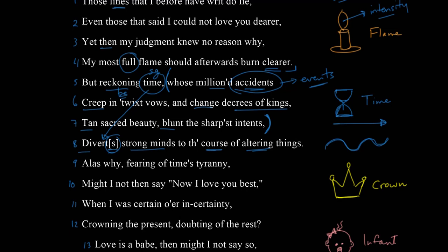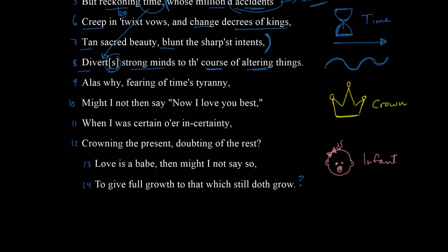Let's make sense of the third section. The poet says 'Alas' — meaning 'oh no' or 'it's too bad' — 'why fearing of time's tyranny, might I not then say now I love you best? When I was certain or in certainty, crowning the present, doubting of the rest.' If we think of time as personified, like a king, then time is constantly in charge, making us change our best intentions. So the king Time comes by and says you cannot love this person anymore, you must love somebody else.